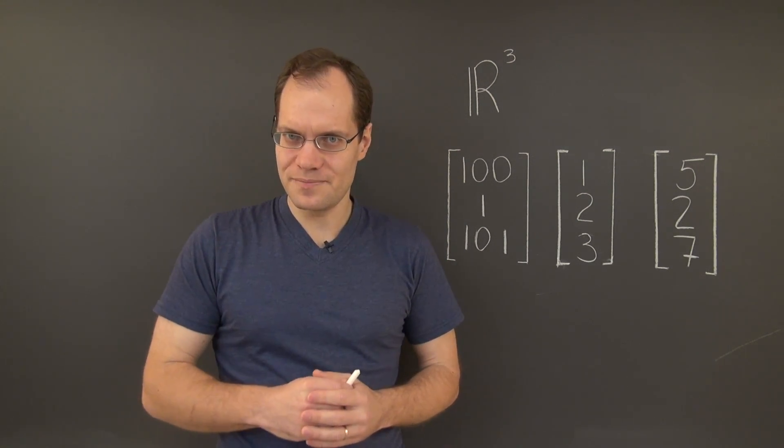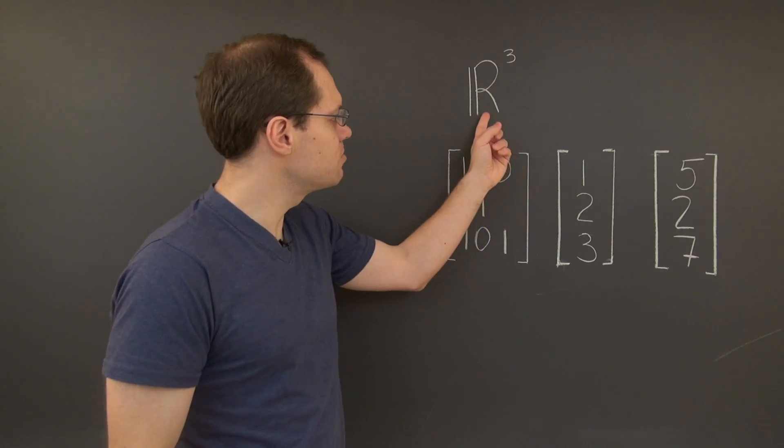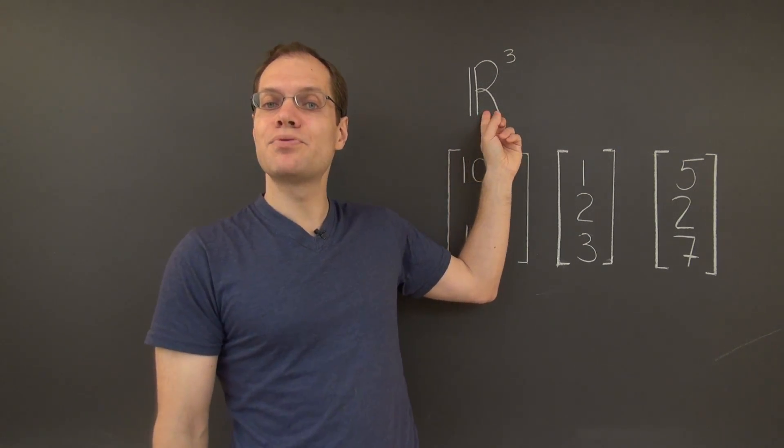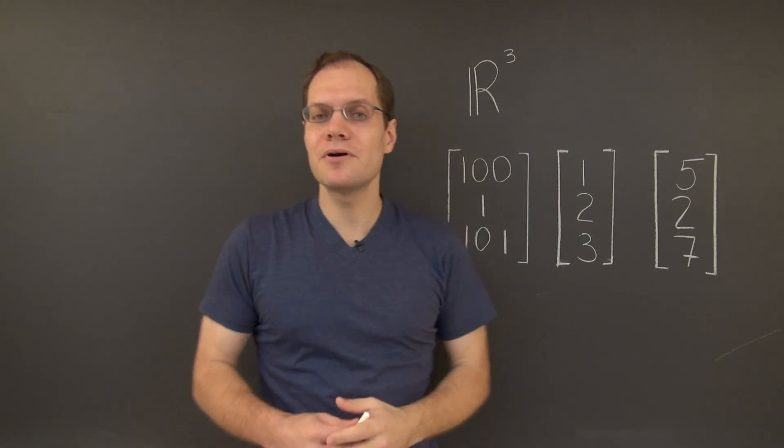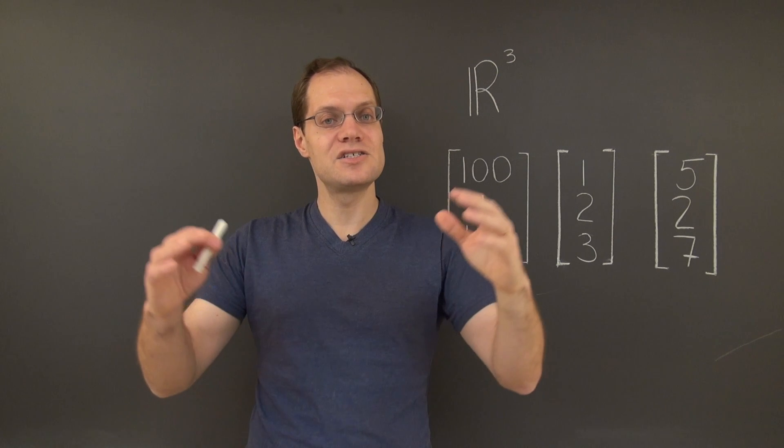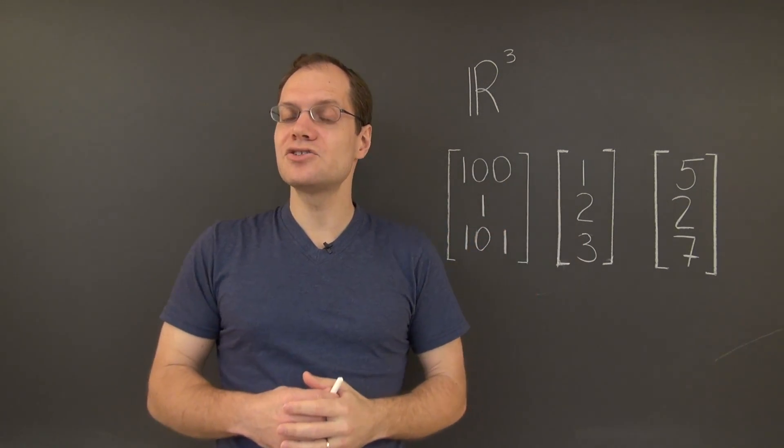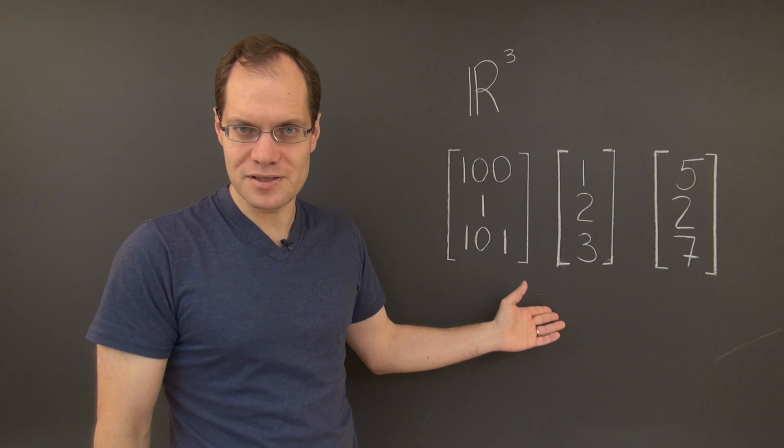And importantly, this subspace is smaller than R3. It is its proper subspace. Proper meaning that it's part of it, but it is smaller. There are vectors in R3 that are not part of this subspace.